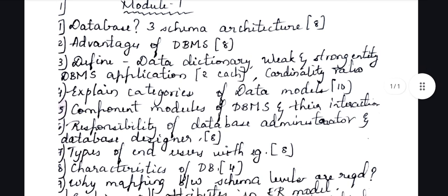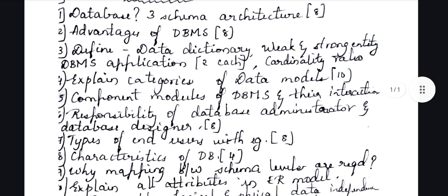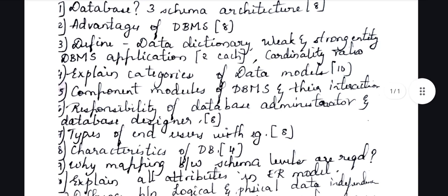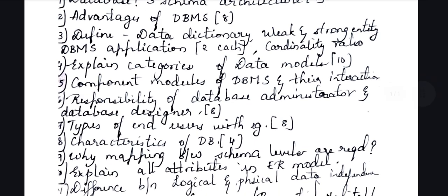Then comes component modules of DBMS and their interaction. You have to explain the modules and how the interaction — essentially the data flow — happens between them. More than just listing the components, the examiner will check how well you have written the interaction part in your answer. That point should be explained well.